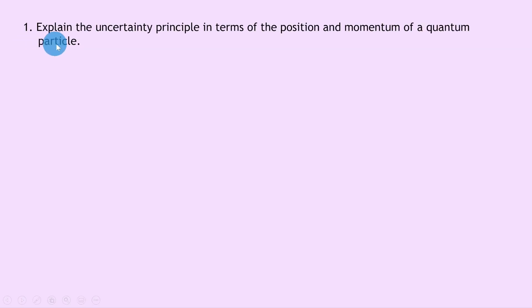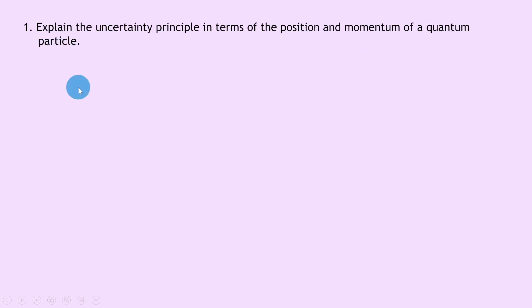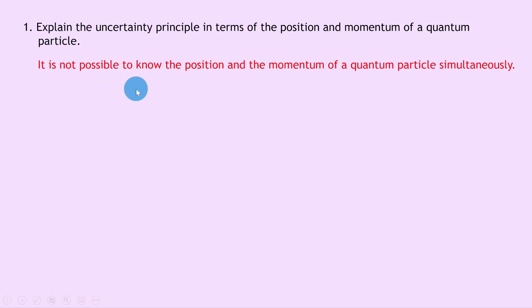Question 1 says explain the uncertainty principle in terms of the position and momentum of a quantum particle. Well, straight from the notes we can say that it is not possible to know the position and the momentum of a quantum particle simultaneously.